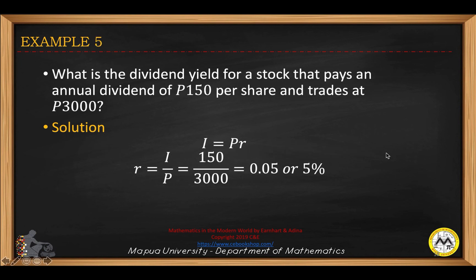What is the dividend yield for a stock that pays an annual dividend of 150 pesos per share and trades at 3,000 pesos? Using the simple interest rate formula, I equals PR: we have 150 as the interest and 3,000 as the principal value. That gives 0.05, or a 5% rate.